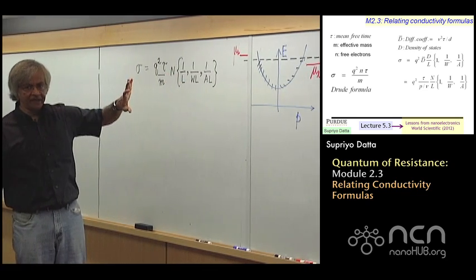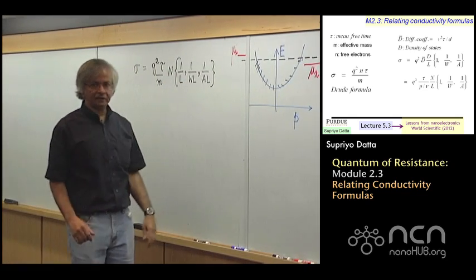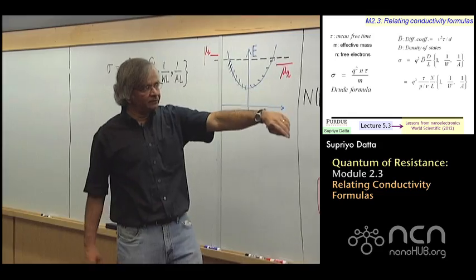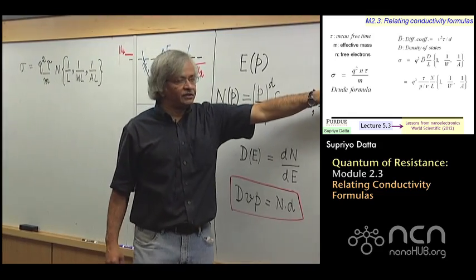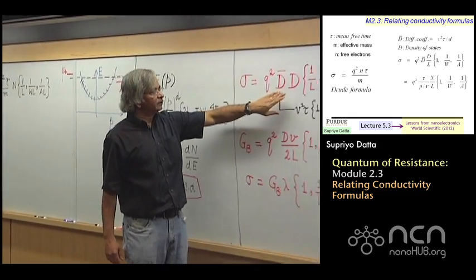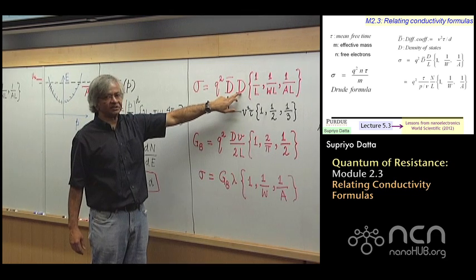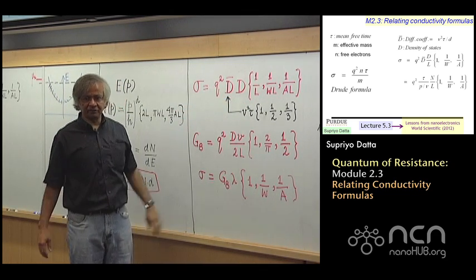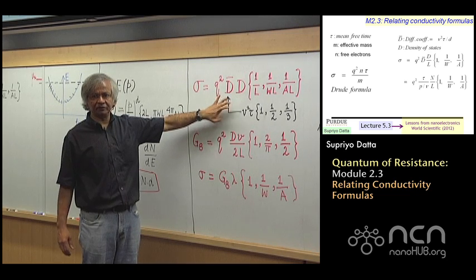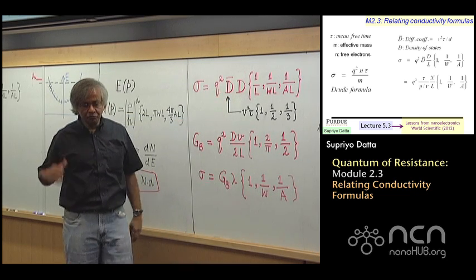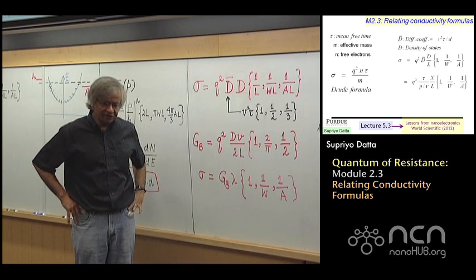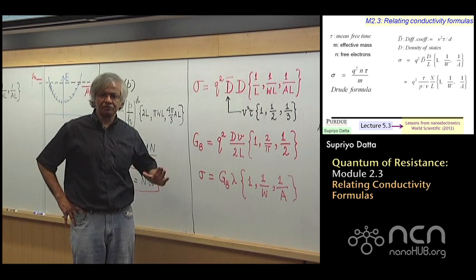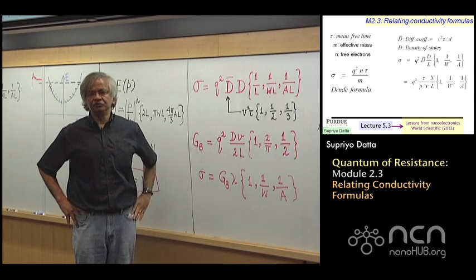But what we have obtained already, namely the expression that we started with, this q square diffusion coefficient times this density of states, that expression is much more general. This holds in general, whereas this Drude formula is a specialized thing which is sometimes equivalent but cannot really be used in general.